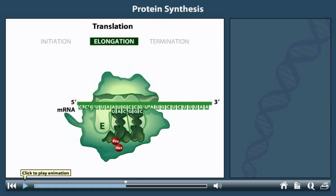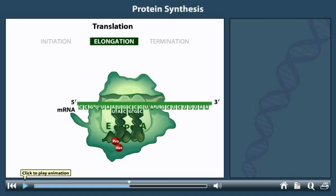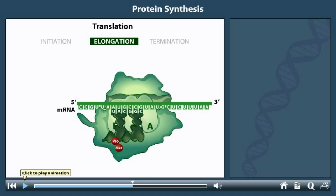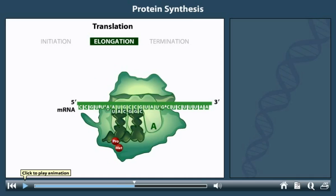After peptide linkage, the empty P site tRNA shifts to the E site on the ribosome, as the ribosome translocates the length of one codon, releasing the empty tRNA. The second tRNA, now bearing a dipeptide, is in the P site. The next charged tRNA enters the open A site, and the elongation cycle repeats.